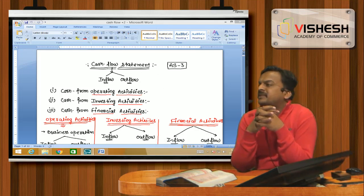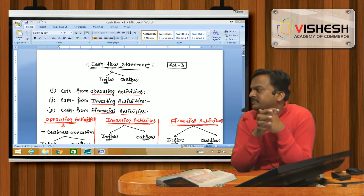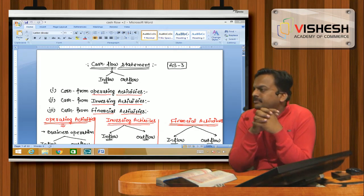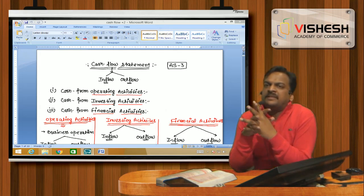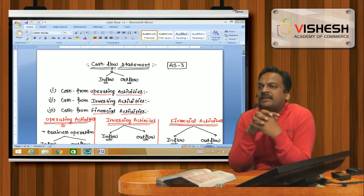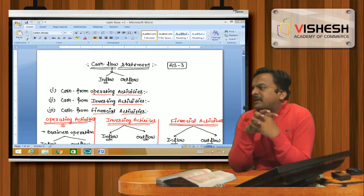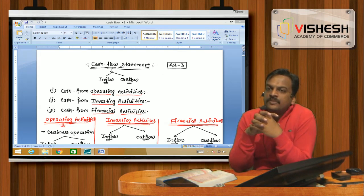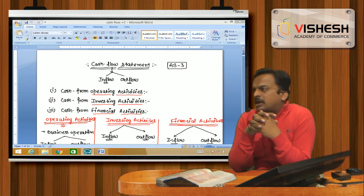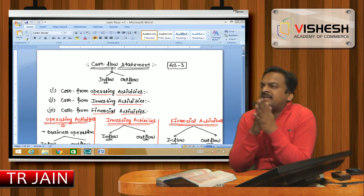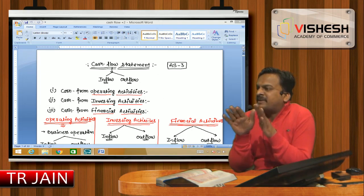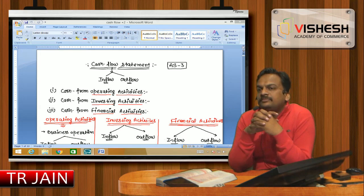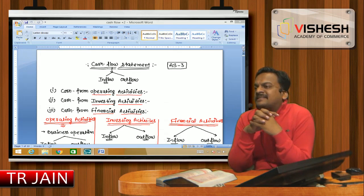This class is the Cash Flow Statement, which I discuss in this chapter. I will tell you about Cash from Operating Activities. In this class, I will cover the operating activities, investing activities, and financial activities.